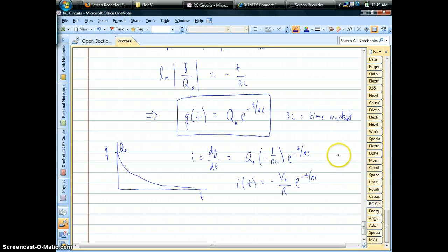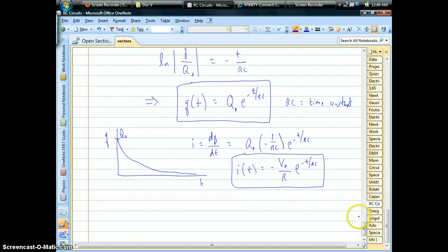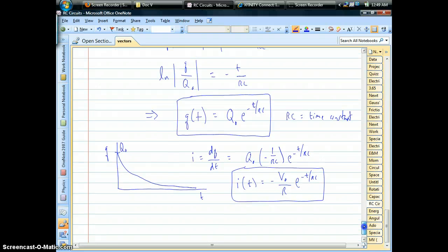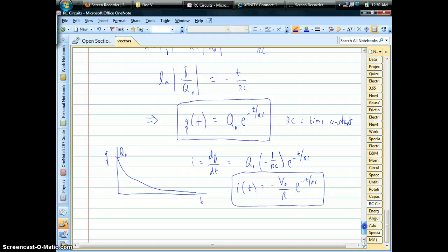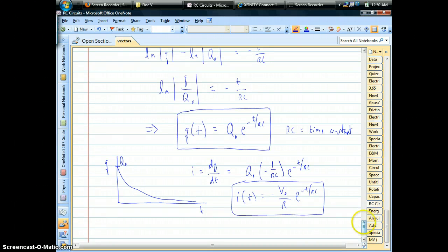As our capacitor discharges, our current starts big and dies down as well over time. And with that, this is a discharging capacitor. Again, when you take away the battery, capacitors can no longer hold the charge, and you get these exponential decays for both charge and current.